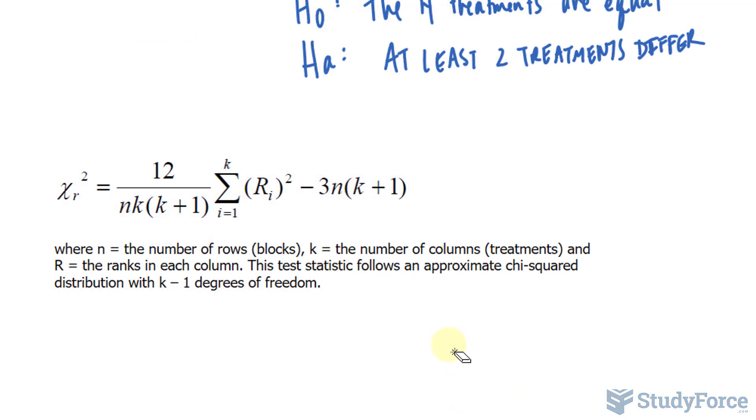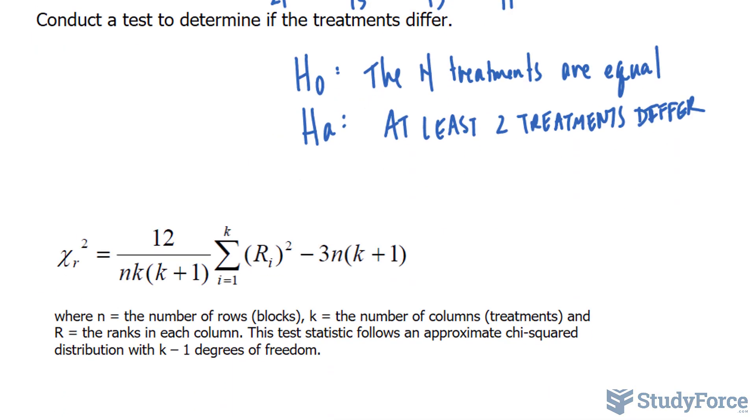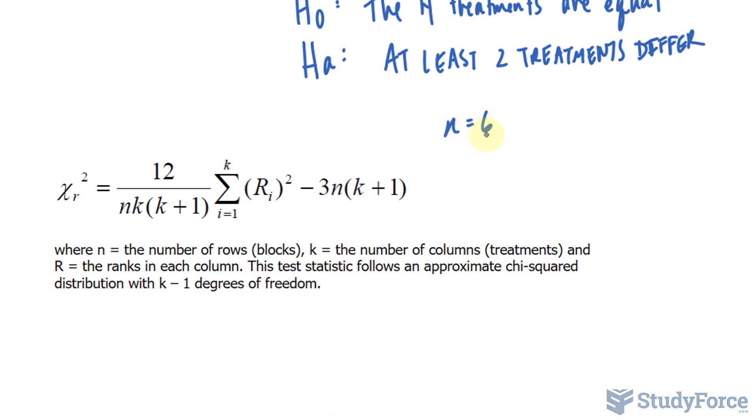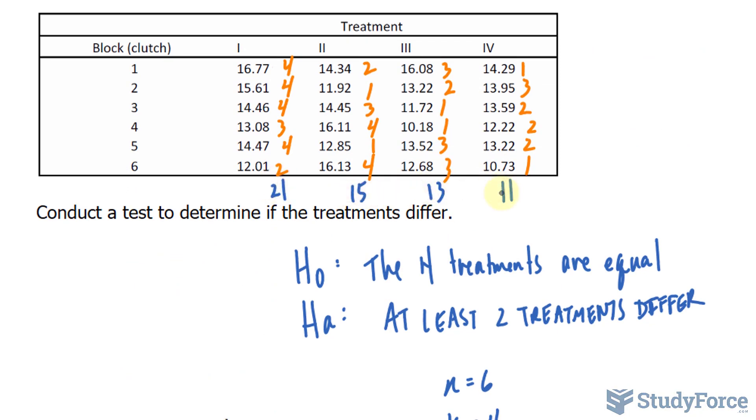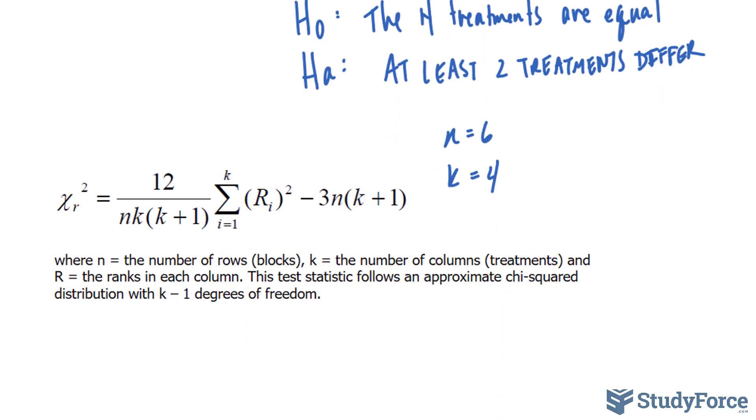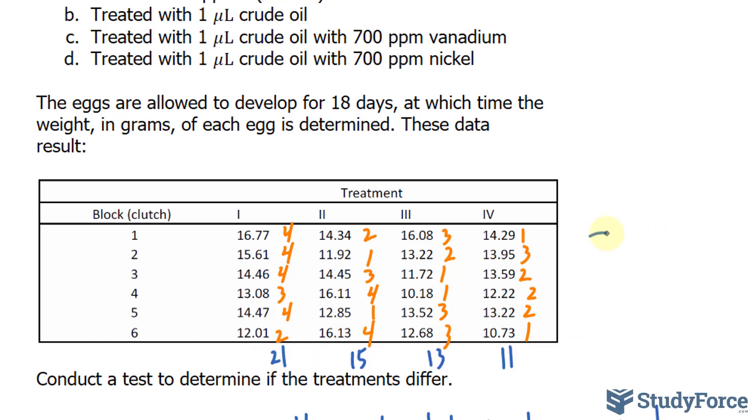On your screen now is the test statistic that we need to calculate. And this little n represents the number of rows. Let's double check. We had 6 rows, so n will equal to 6. K represents the number of columns, or the amount of treatments, and that was 4. This part represents each of these values raised to the power of 2 and summed up. We'll calculate that in a moment. And the rest we can get from these variables.